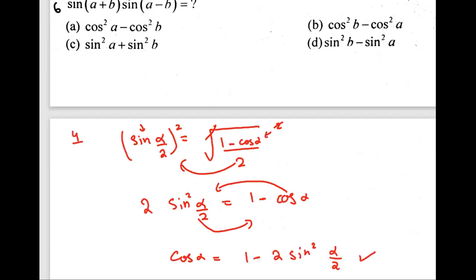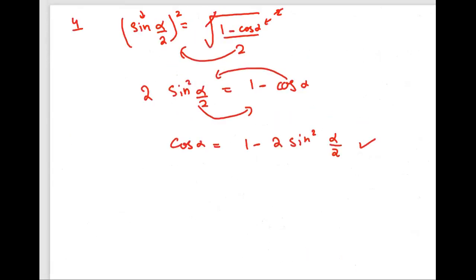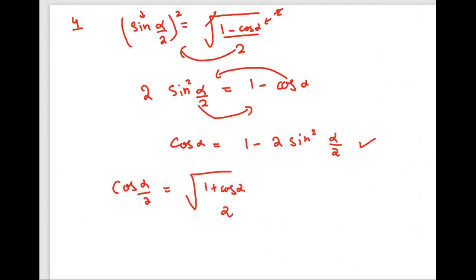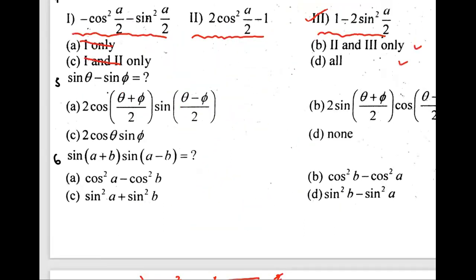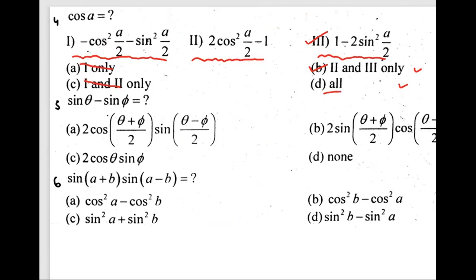Using the identity cos(α/2) = √((1 + cos α)/2), squaring both sides gives cos²(α/2) = (1 + cos α)/2. Multiplying by 2: 2cos²(α/2) = 1 + cos α, so cos α = 2cos²(α/2) − 1. This is option 2. Since both 2 and 3 are valid, the answer is B (2 and 3).